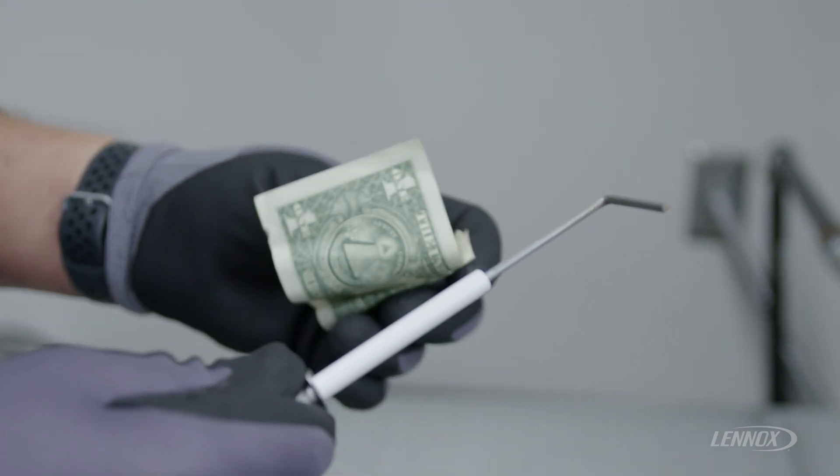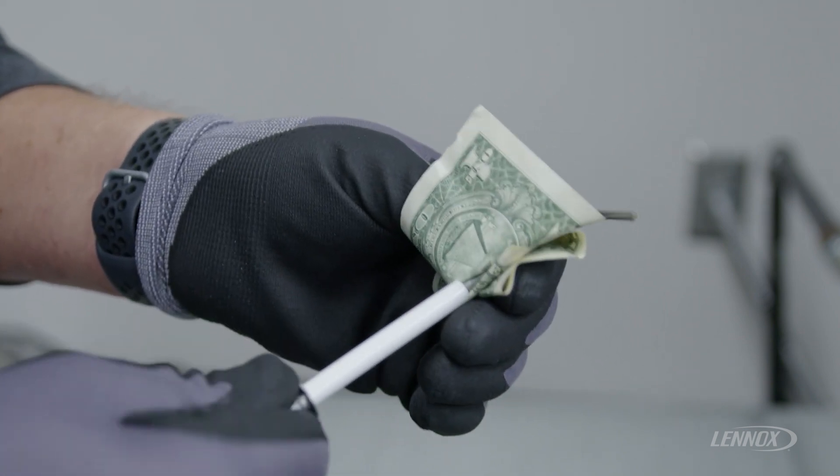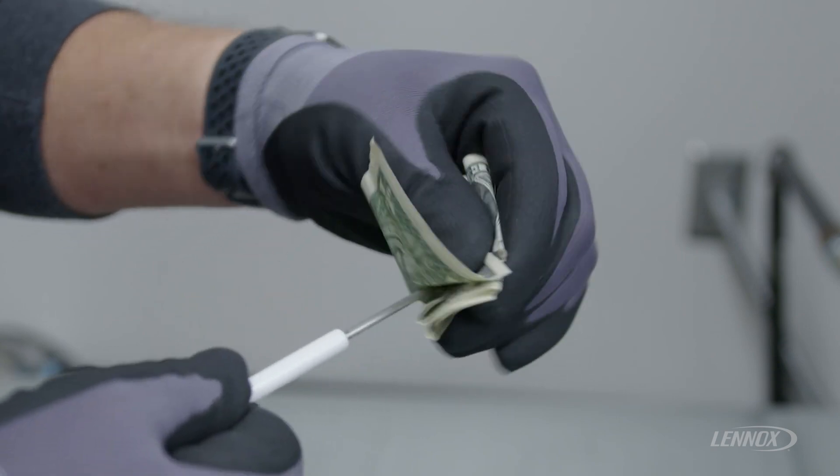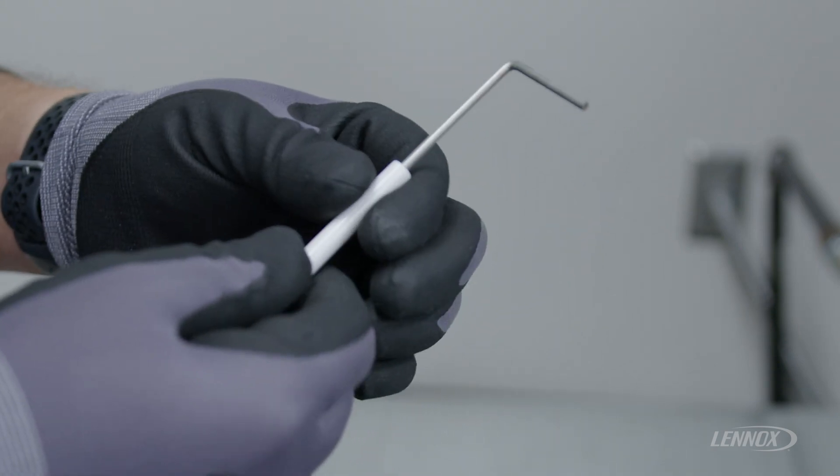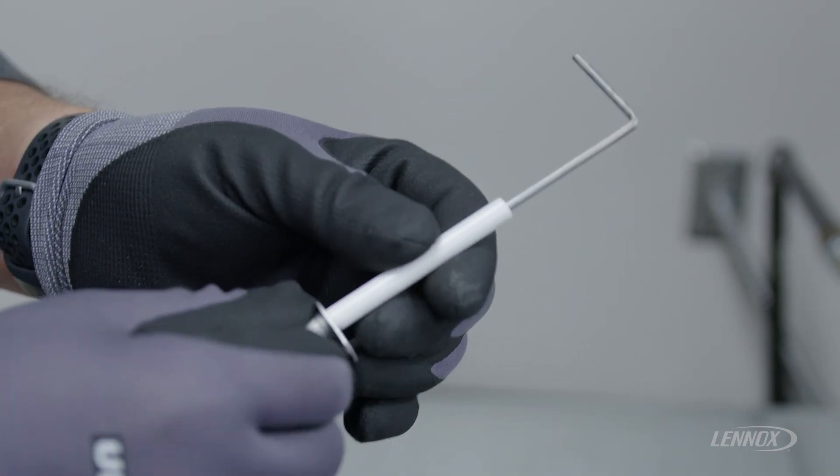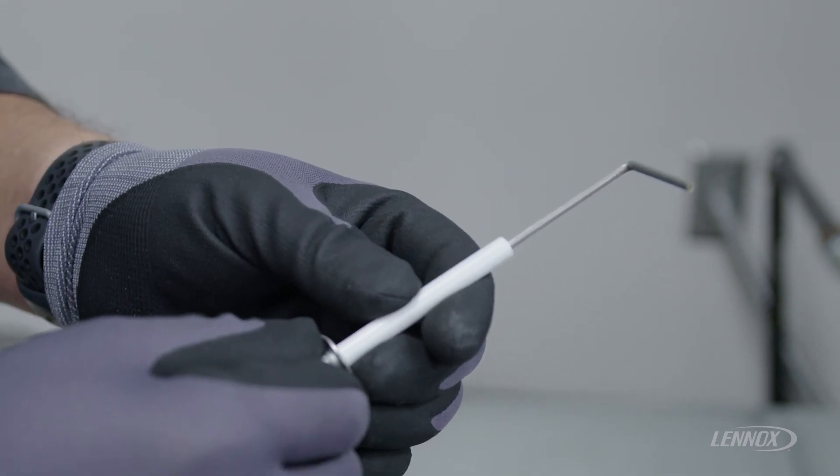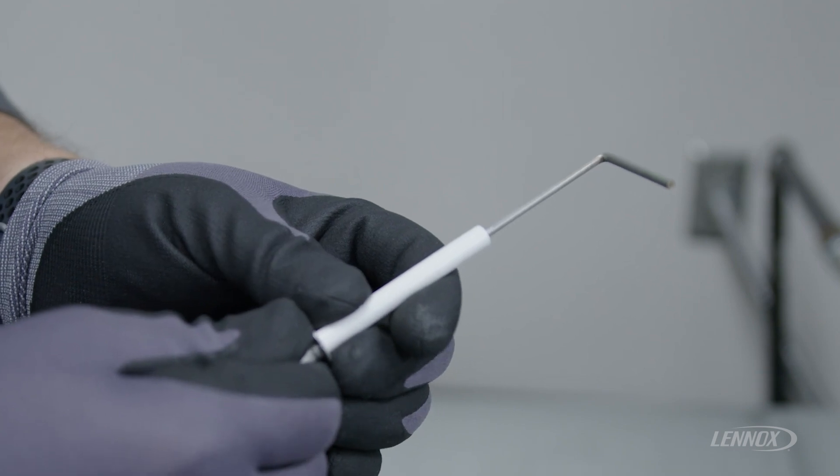All you do is take the dollar bill, clean the flame sensor itself with a light motion. Once you got all the contaminants and soot and other items off the flame sensor, we want to make sure that it is clean and then we reinstall it into the furnace.